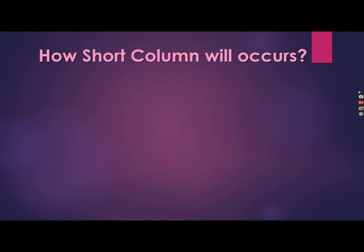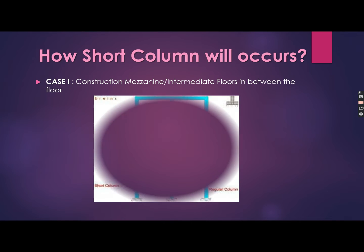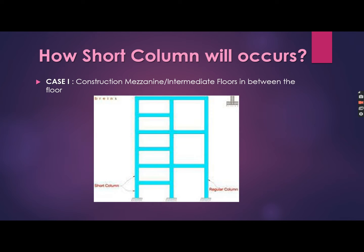How does the short column effect occur in buildings? Case one: construction of mezzanine or intermediate floors in between the main floors introduces the short column effect. For example, consider a three-story building — in one of the bays there is a mezzanine floor in each story. Due to the construction of the mezzanine floor, the height of the column is reduced, a short column is formed, and thus the short column effect is introduced in that story.